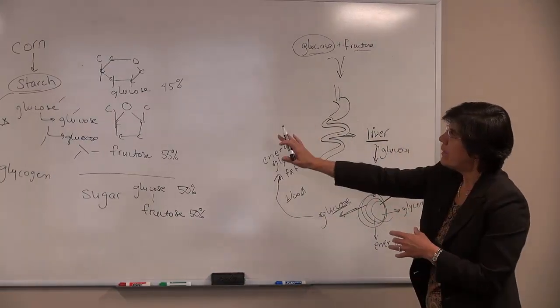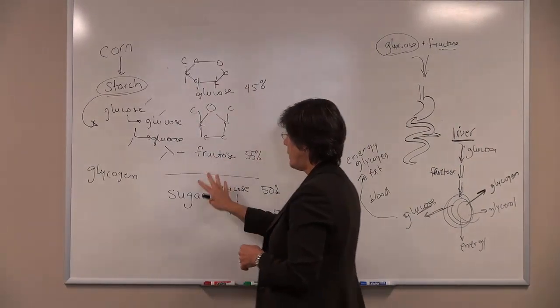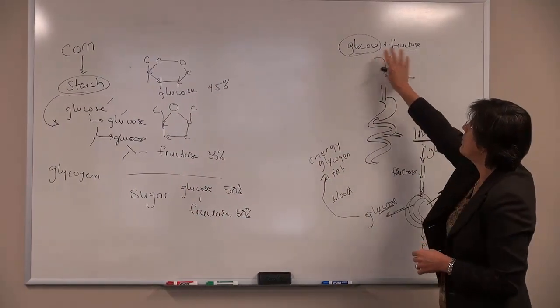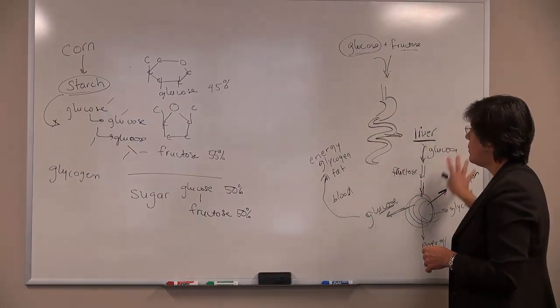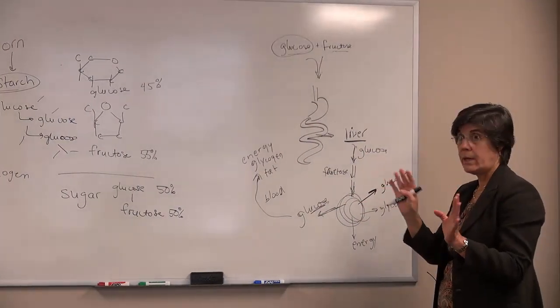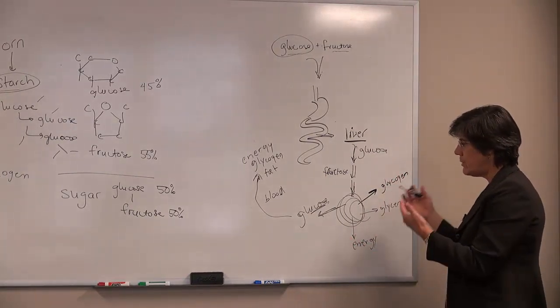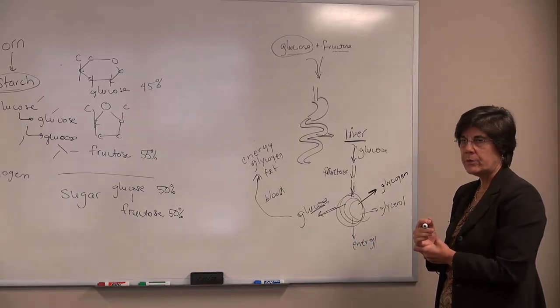So the bottom line of all of this is that when we eat high fructose corn syrup, when we eat sugar, when we eat honey, we're getting glucose and fructose. The body uses those the same way. It doesn't change whether it comes from any of those sources and we use that for our body to make energy or to store that energy for later use.